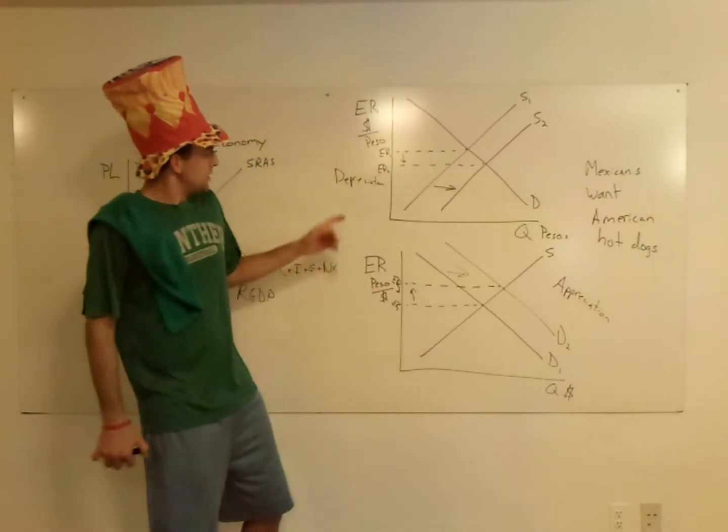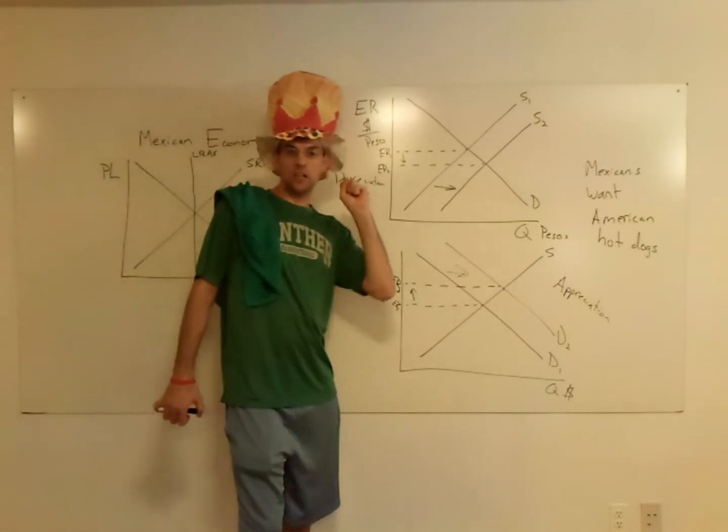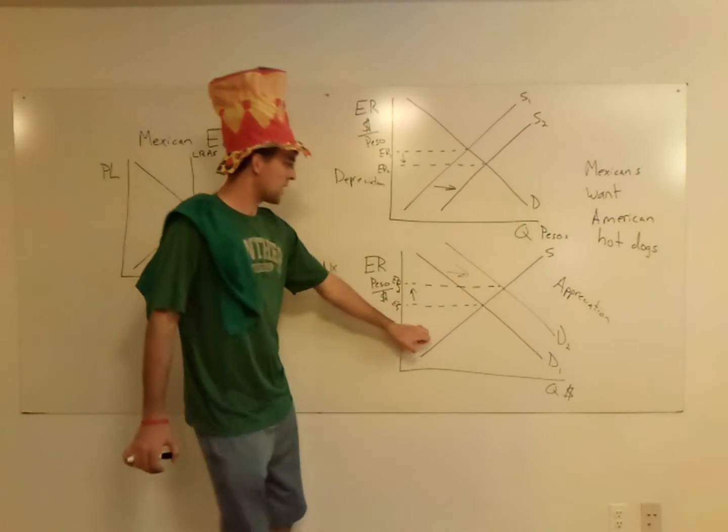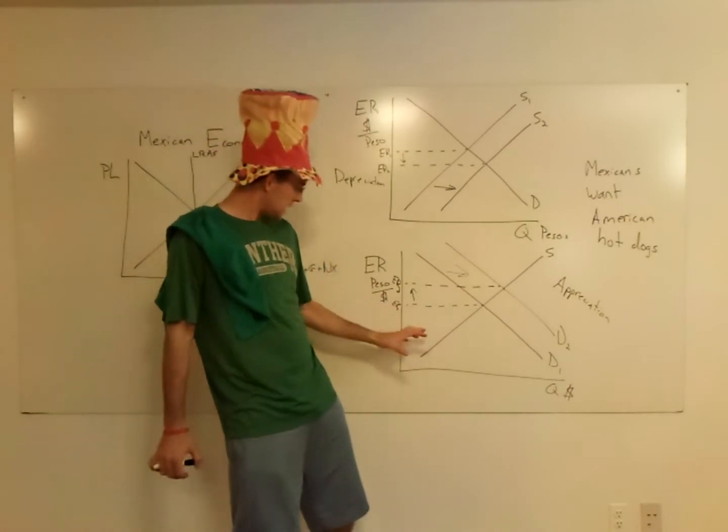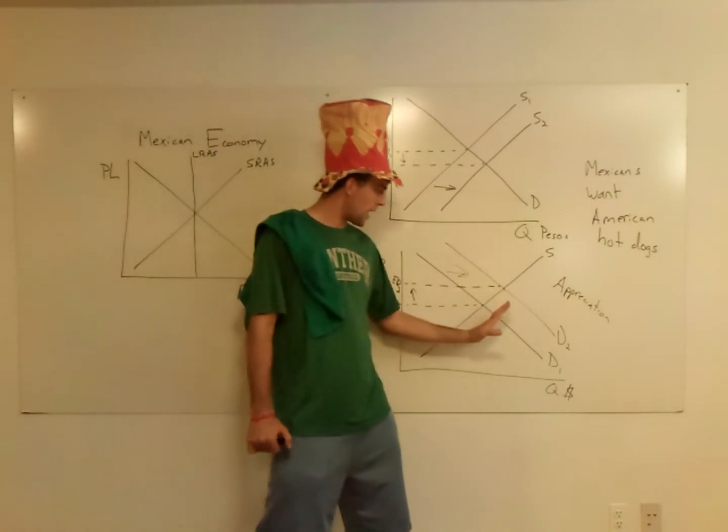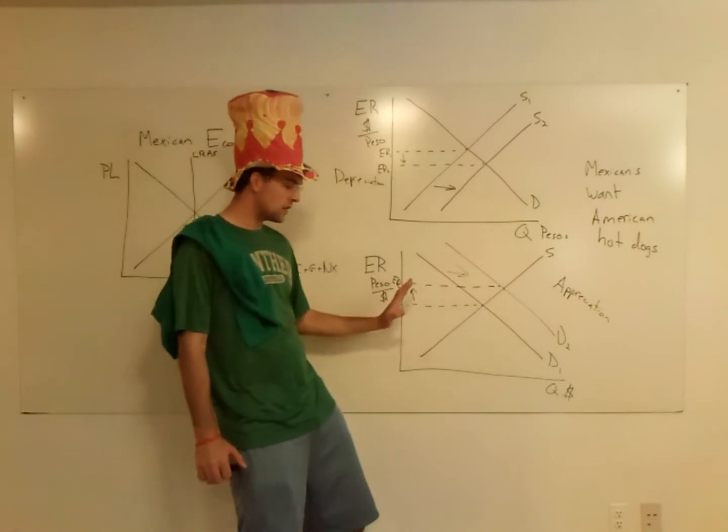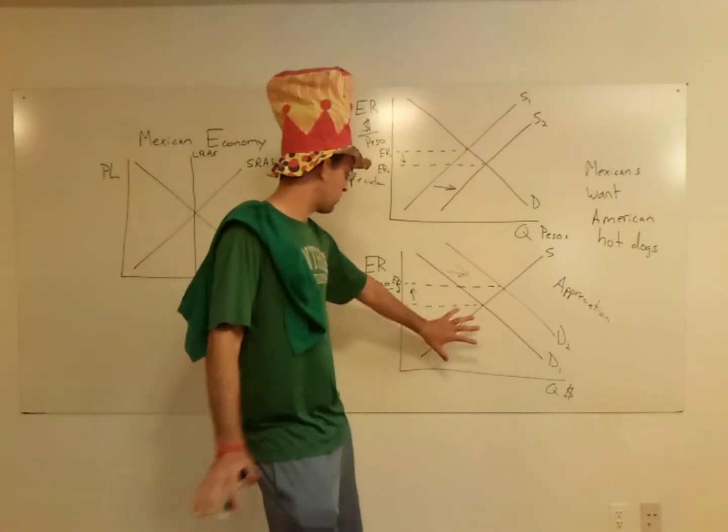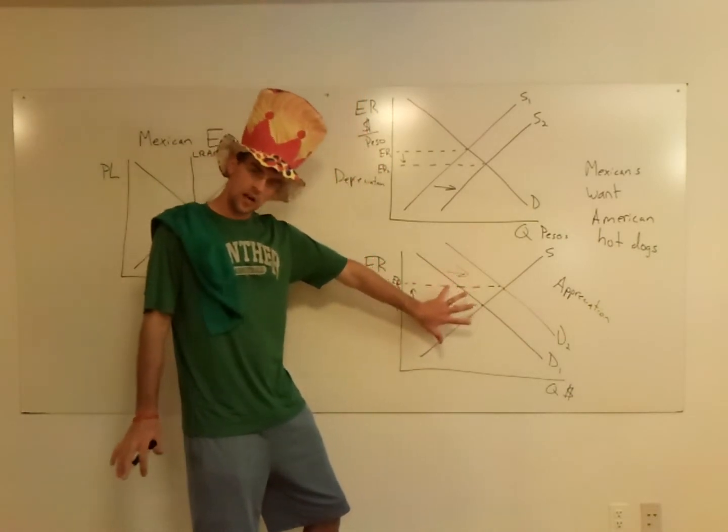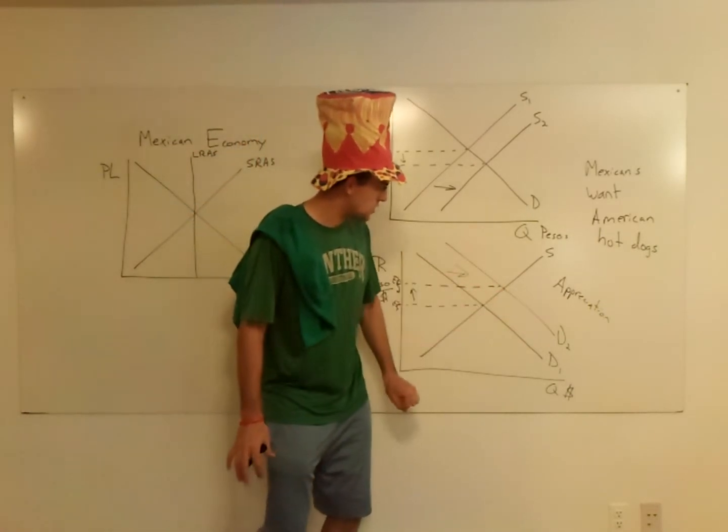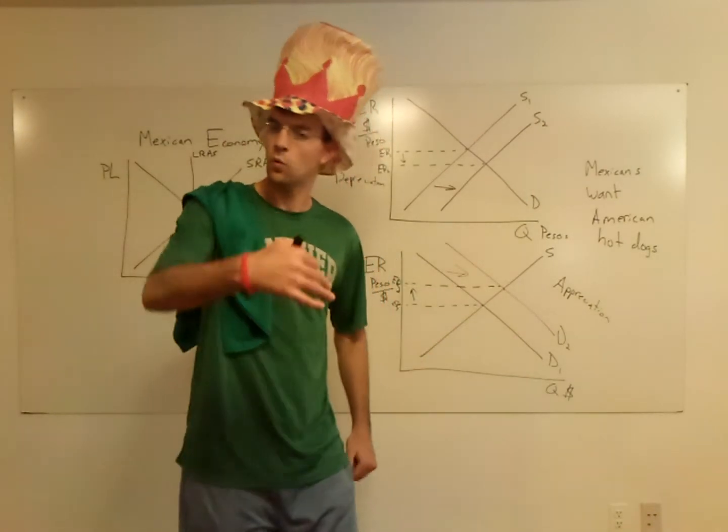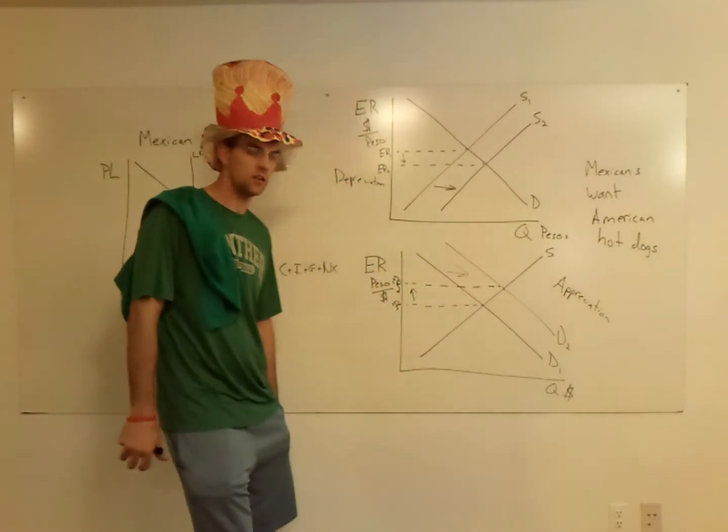The other thing is, sometimes on the AP test they'll say to you, I want to know what happens to the supply of American dollars. Well, to get appreciation like this, the supply of American dollars has to decrease. It has to do with a different way of looking at the dollars in this foreign exchange market. But if you follow the rule and you know that you should get appreciation, then you should be able to figure out, okay, I'll just move the supply curve in the opposite direction or whatever the question is dictating to you.